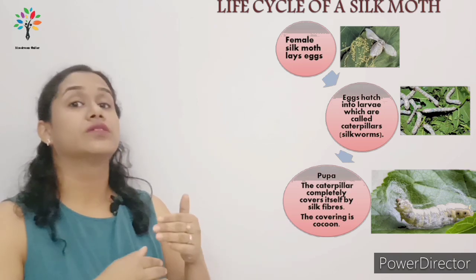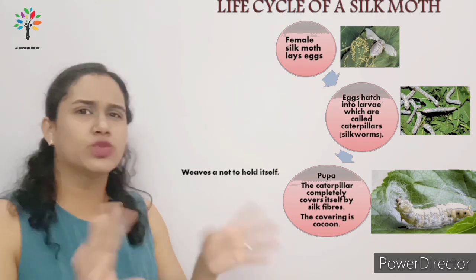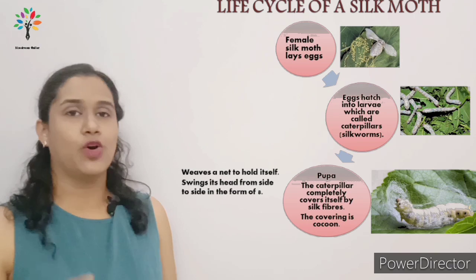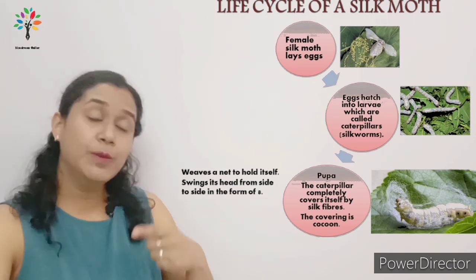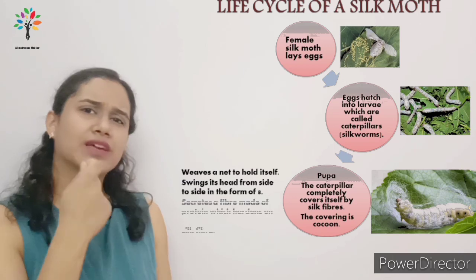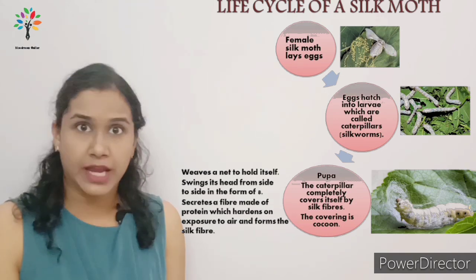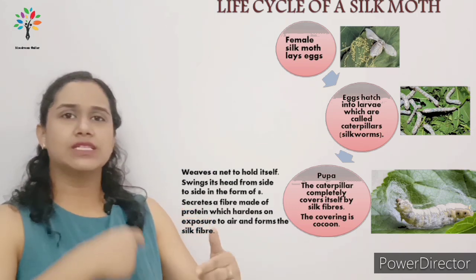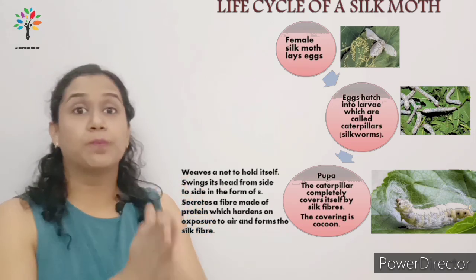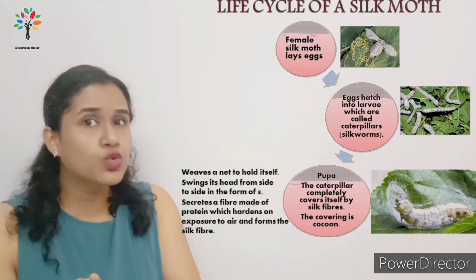After eating, the caterpillar weaves a net around itself to hold itself so that it won't fall. Then it starts swinging its head in the form of the digit 8 and spins a fiber around itself, which is the silk fiber. It secretes a protein, and this protein gets hardened on exposure to air, forming a cocoon on the caterpillar.